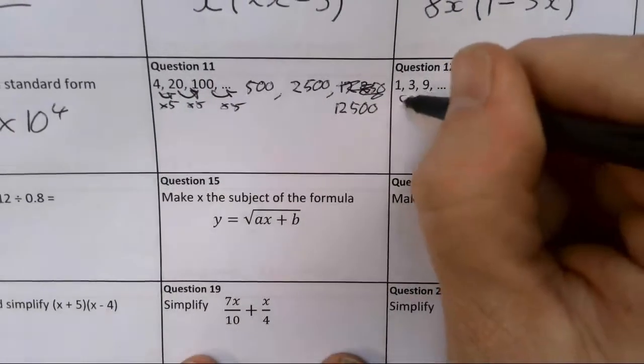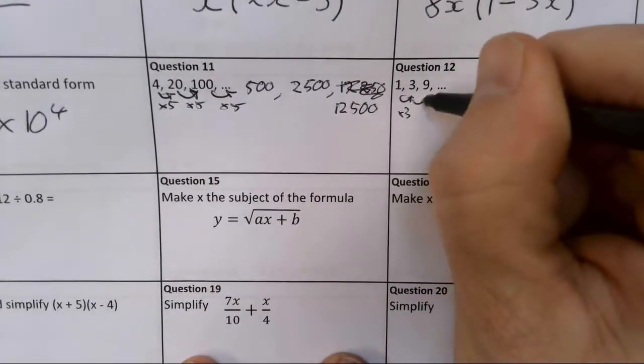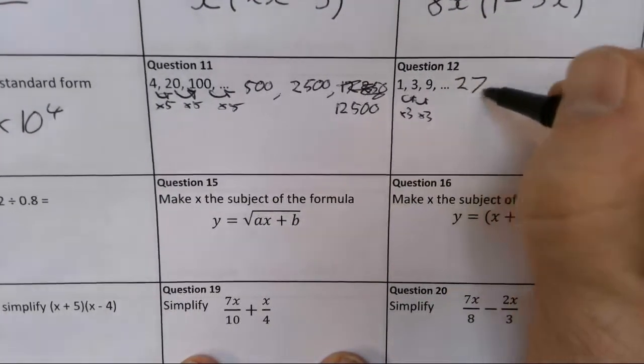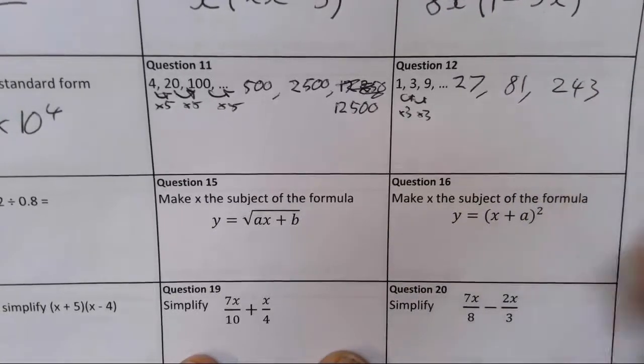Question 12. It's going to be times by 3 each time. Times by 3, times by 3. I'm sure we've had this progression before. So we have 27, 81, 243.